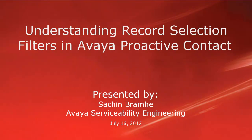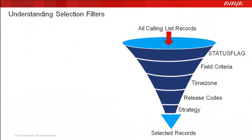Hello and welcome. I'm Sachin Brahmhe with Avaya Serviceability Engineering. This video is about understanding the record selection filters in Avaya Proactive Contact. Record selection is the method to filter out the records to be called from the calling list on a campaign. From the editor application, you are able to specify the criteria for your selection, and the records meeting that criteria are selected. But there are some invisible filters also that come into play while selecting the records. In this video, we will look at how these filters work.